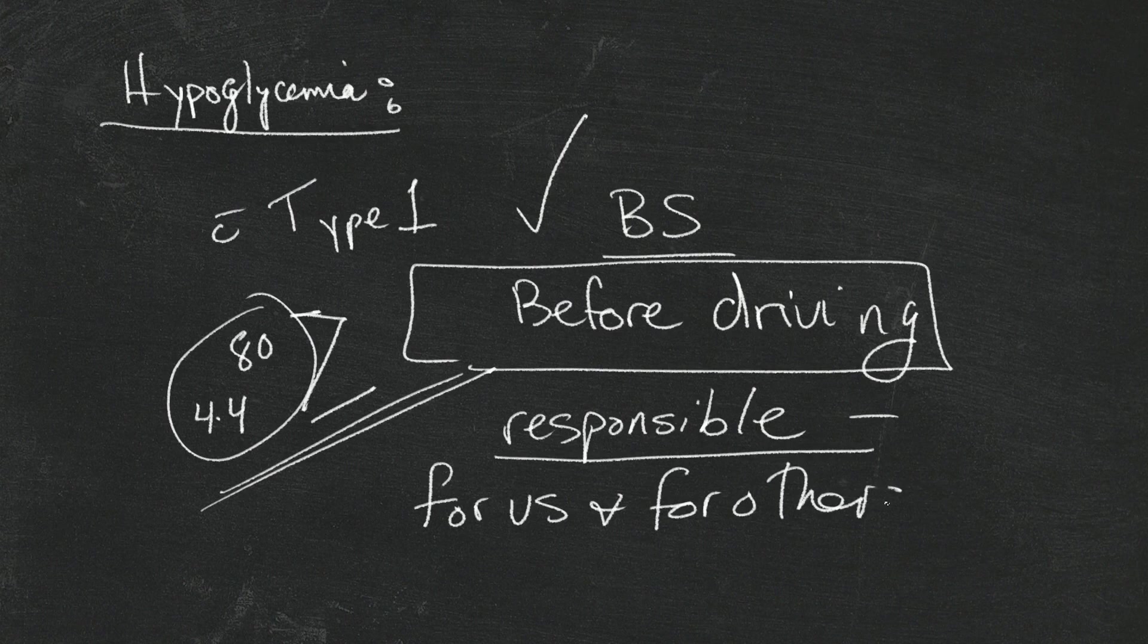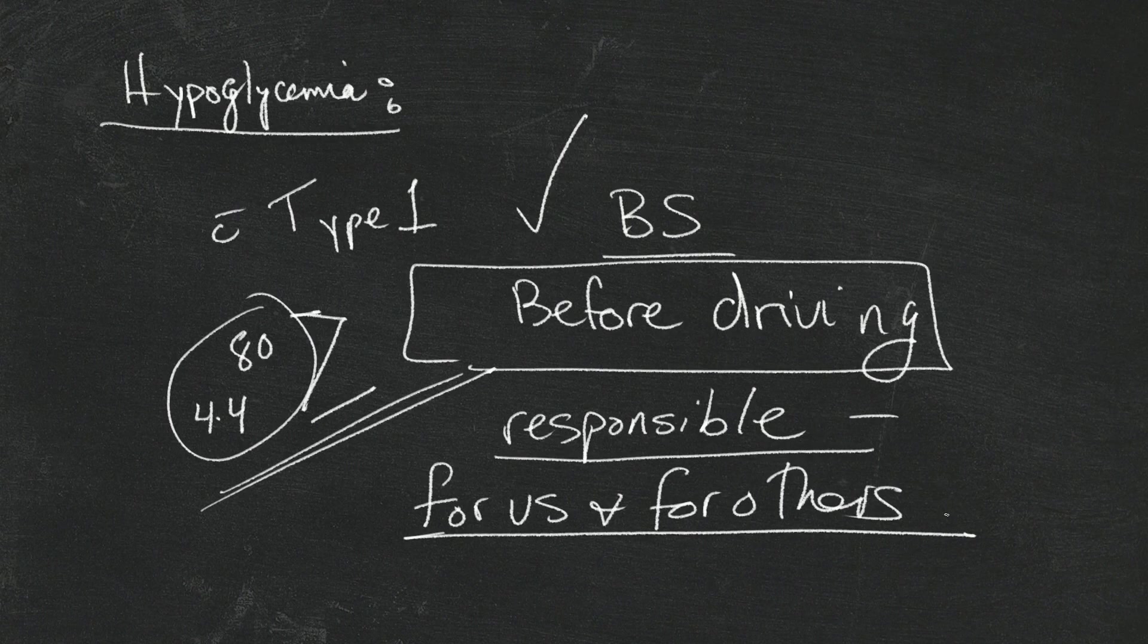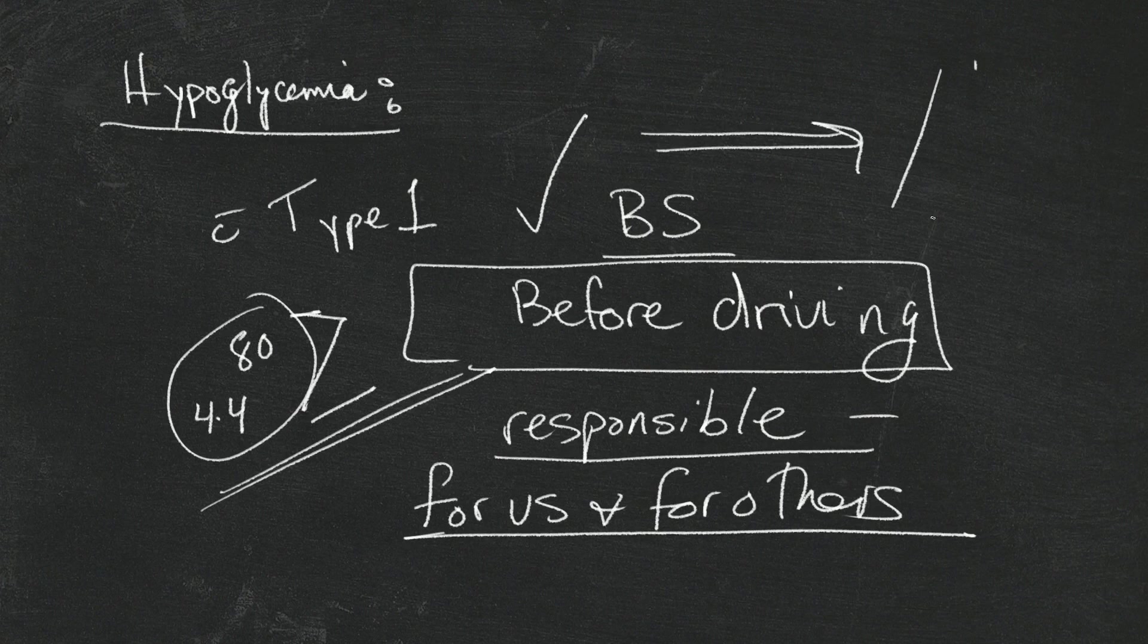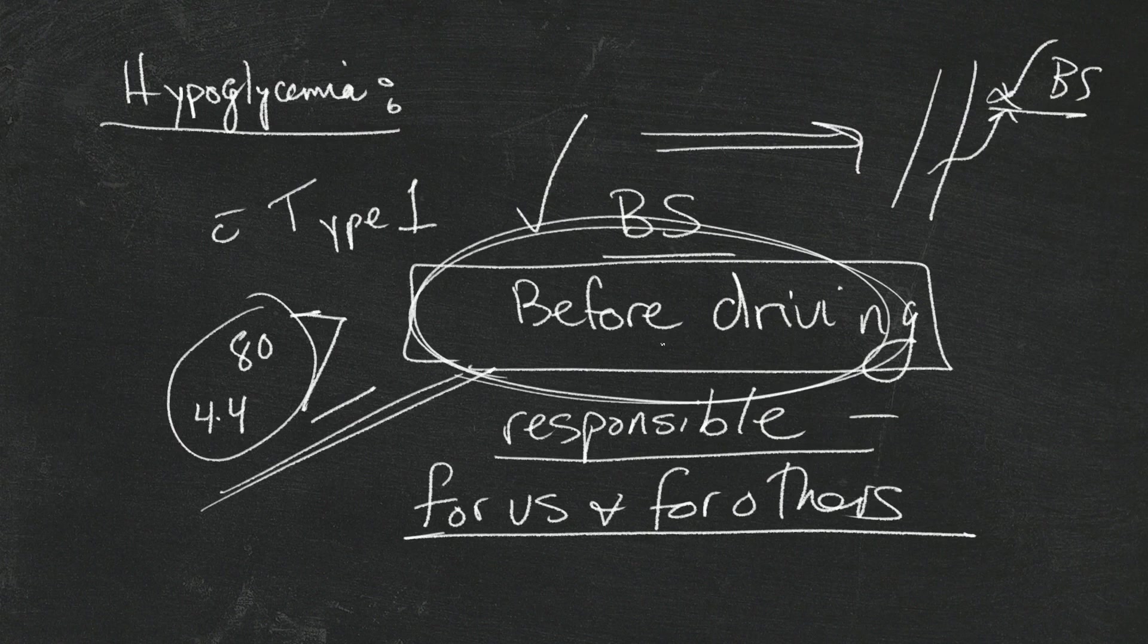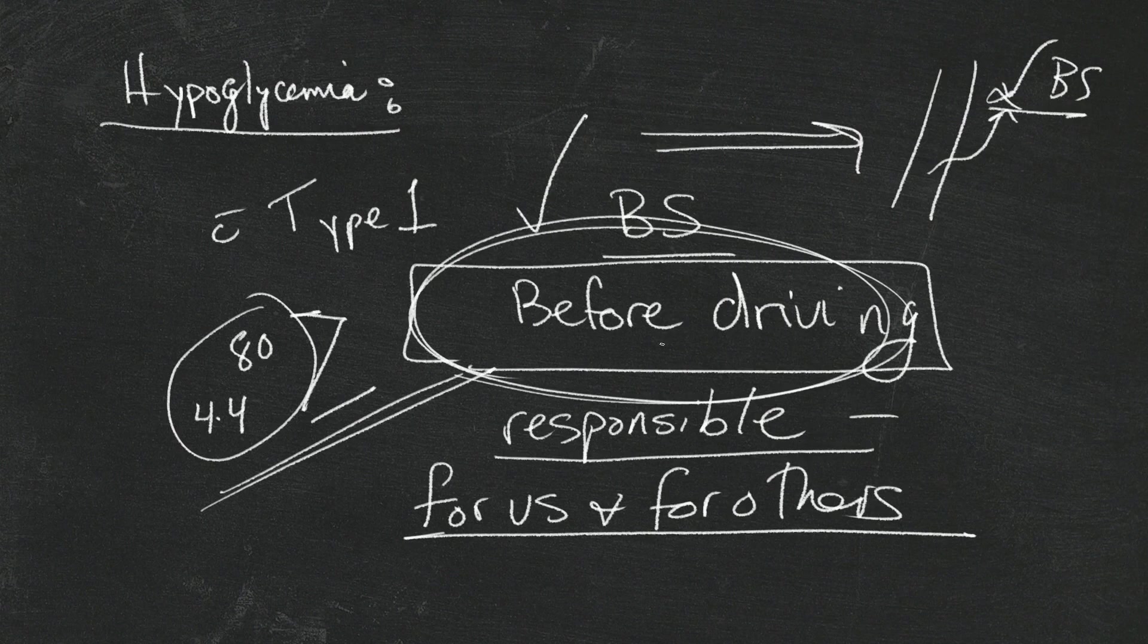For us and for others, if you're feeling low, what you want to do is pull your car over to the side of the road and check your blood sugar and stop and wait until your blood sugar comes back up to a normal level. You don't want to be driving and being in the midst of a low blood sugar.